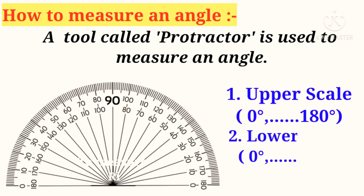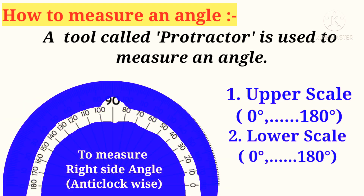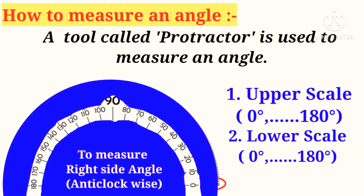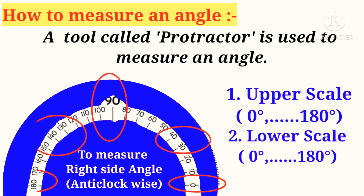Number two, there is another scale called the lower scale, whose value starts from 0 degrees to 180 degrees from right side to left side, to measure the right angle in anticlockwise direction.